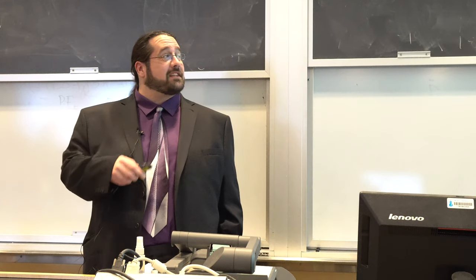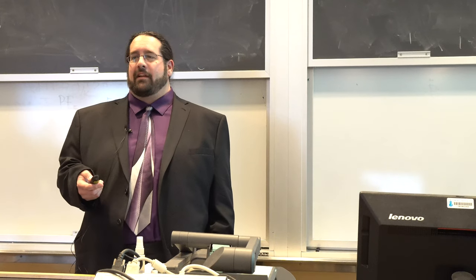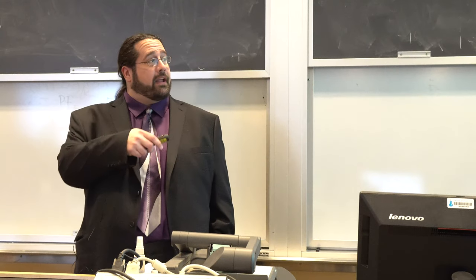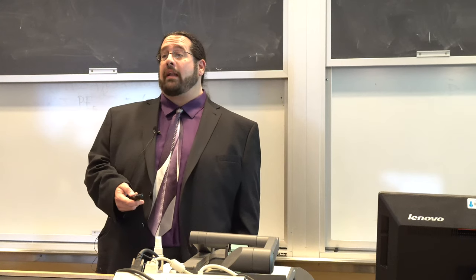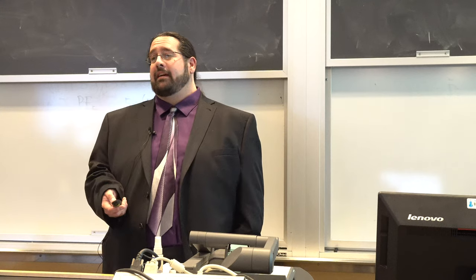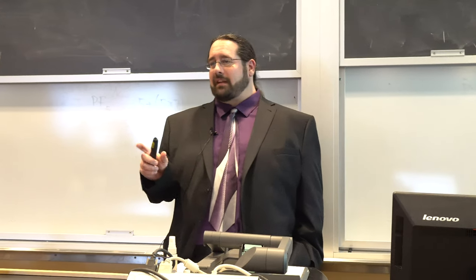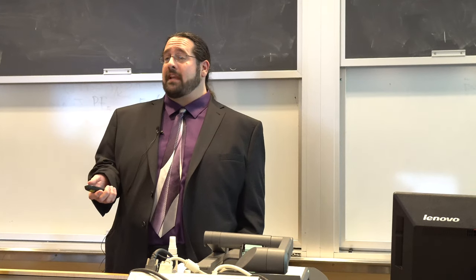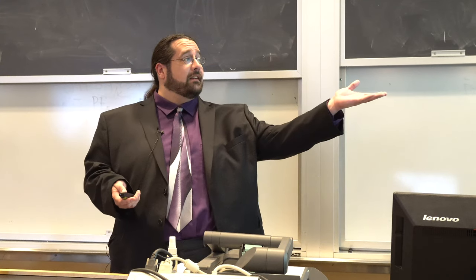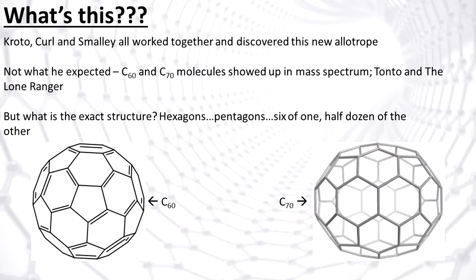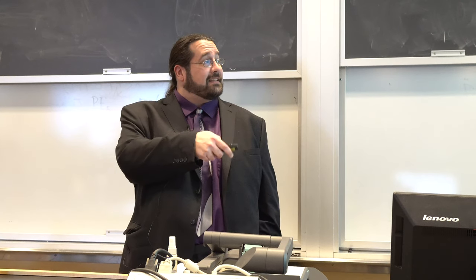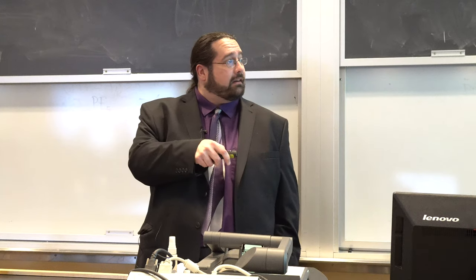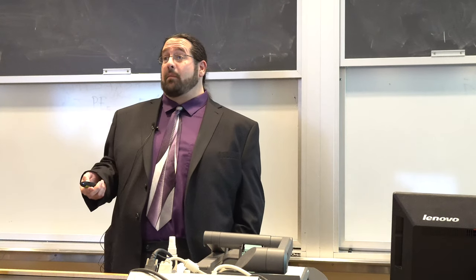One problem they had was coming up with what the exact structure was. Harry talked to the mathematicians at Sussex to work on it mathematically. He was playing with his daughter one day creating little domes out of pieces of paper — hexagons and pentagons — and it came to him that possibly these structures were actually balls made up of hexagons and pentagons with carbon atoms. They found that C60 was basically like a soccer ball and C70 like a rugby ball.